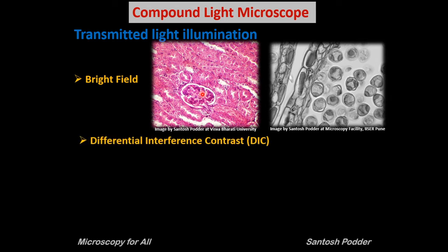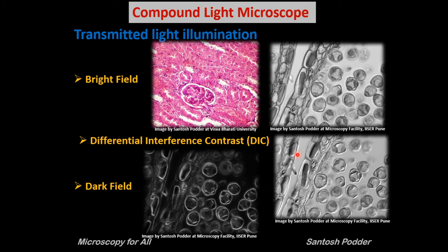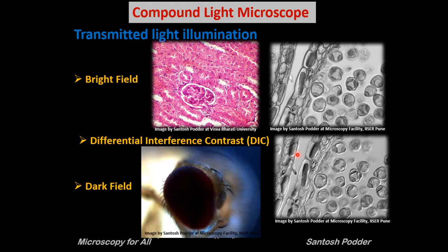In DIC microscopy, a special component is inserted into the bright field pathway to create a pseudo-3D effect. It enhances the contrast of the sample — the field is dark and your sample appears glowing. You can clearly see how the same sample looks in DIC versus bright field. This microscope does not allow scattering light from outside the sample, so it is a contrast microscope. For example, you can clearly see the eye of a fruit fly — an image that is impossible to take with a bright field microscope.